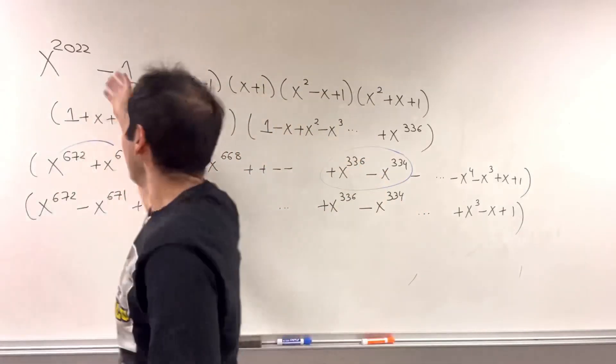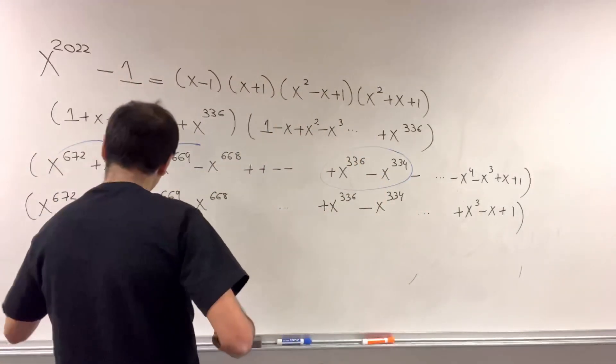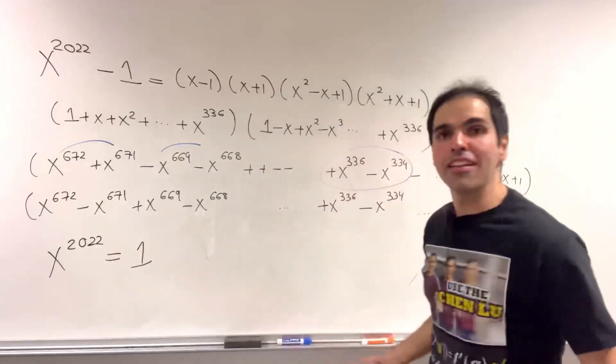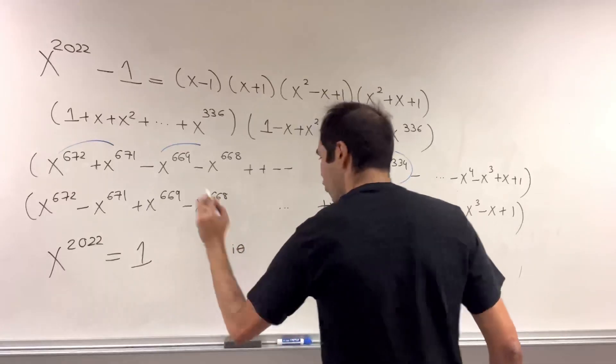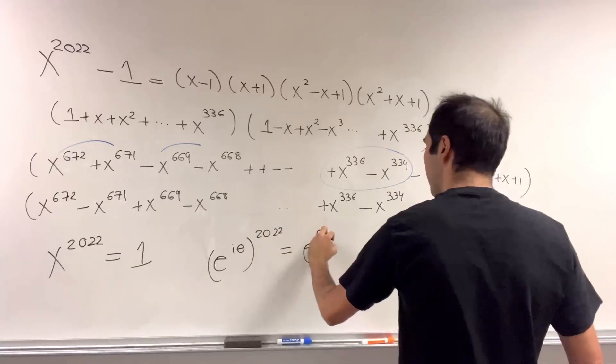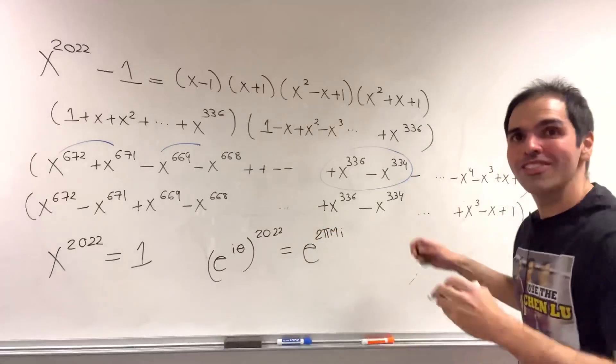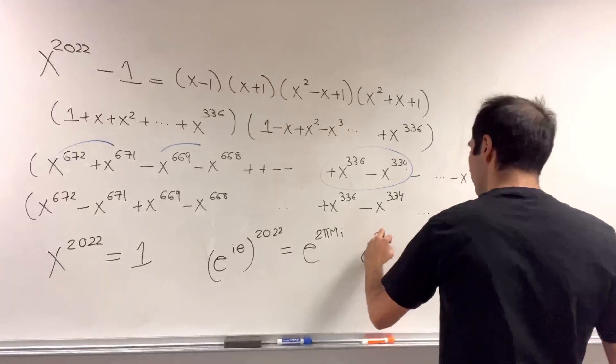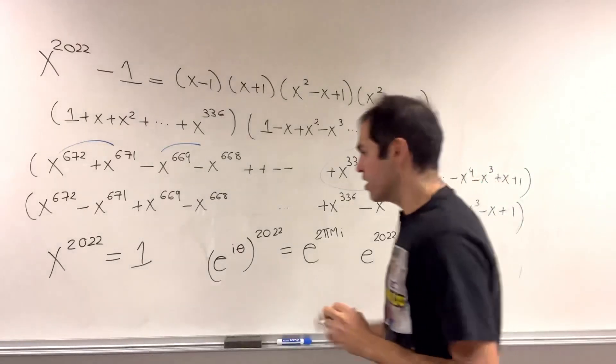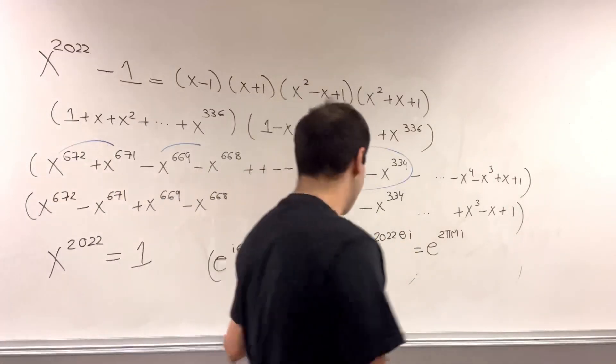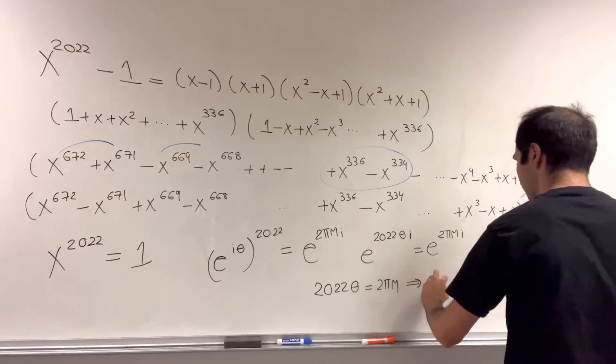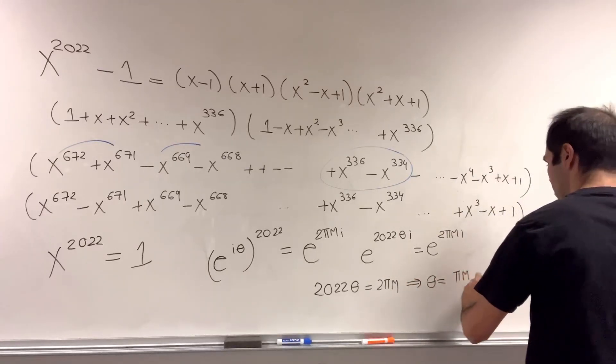But now, I would like to remind you, x to the 2022 equals 1. That's not such a bad equation, after all. Because, notice, the absolute value of x equals 1, so x has the form e to the i theta times 2022 equals 1. Well, 1 is e to the 2 pi mi. So 2 times myself times i. And then what we get is e to the 2022 theta i equals e to the 2 pi mi, where m is any integer. And then comparing exponents, what we end up getting is 2022 theta is 2 pi m, which tells you that, well, theta is just pi m over 1011.